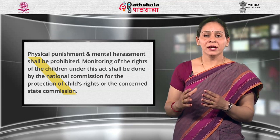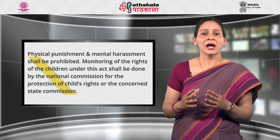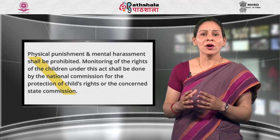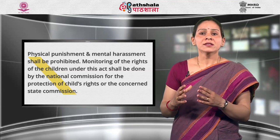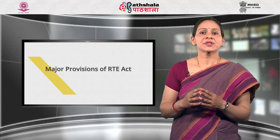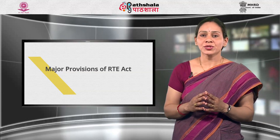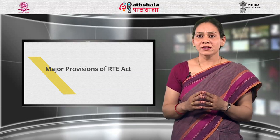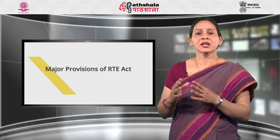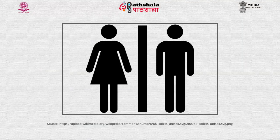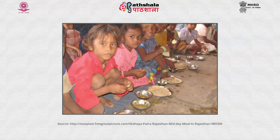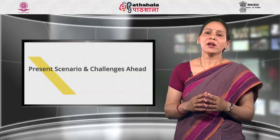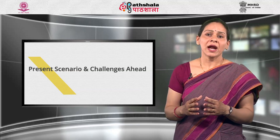Physical punishment and mental harassment shall be prohibited. Monitoring of the rights of children under this act shall be done by the National Commission for the Protection of Child's Rights or the concerned State Commission. Schools need to have certain minimum infrastructural resources such as a classroom for every teacher, a school building, one office, one multipurpose hall for the headmaster, a store room, separate toilets for girls, clean drinking water arrangement, a kitchen for midday meals, a playground, library, teaching-learning materials and sports materials.